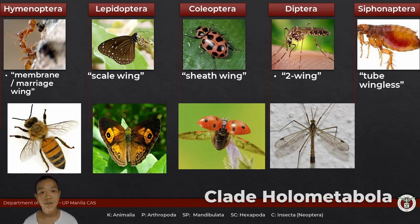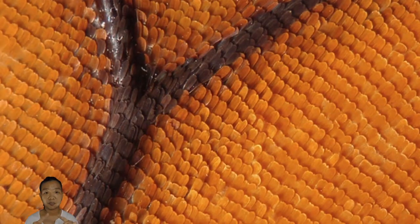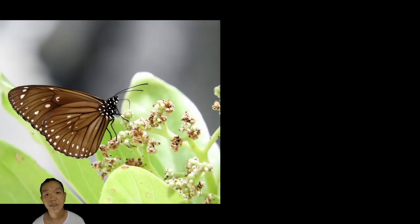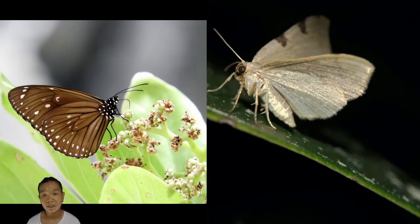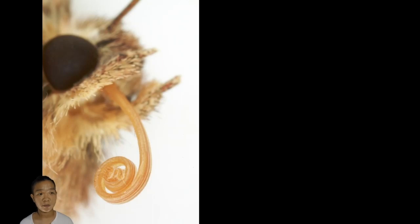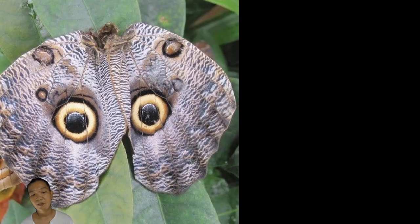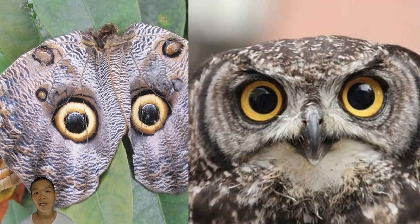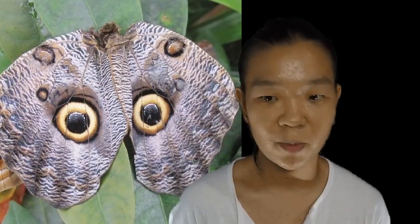Lepidoptera literally translates to 'scale wings.' The wings of members of this group have scales — if you touch a butterfly by the wings, you'll see a slight powder on your hand; those are the wing scales. The two main groups are butterflies, which are mostly diurnal, and moths, which are mostly nocturnal. Members of Lepidoptera also have a coiled proboscis because they feed on nectar. Some moths and butterflies have wing patterns that look like eyes staring straight at you — an adaptation to avoid predation. At first glance — which is sometimes all you need to spook a predator away — that could spell the difference between life or death for a Lepidoptera.